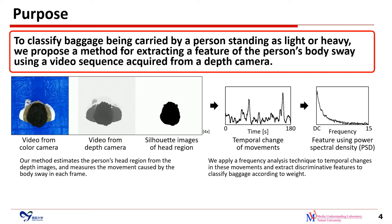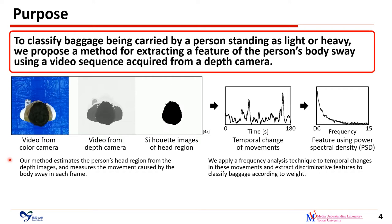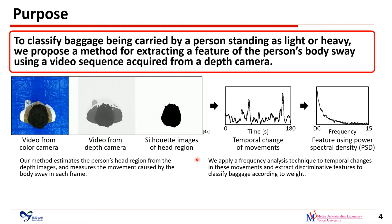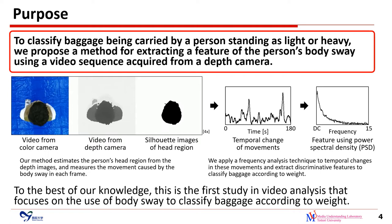To classify baggage carried by a standing person as light or heavy, we propose a method for extracting a feature of the person's body sway using a video sequence acquired from a depth camera. Our method estimates the person's head region from the depth images and measures the movement caused by body sway in each frame. We apply a frequency analysis technique to temporal changes in these movements and extract discriminative features to classify baggage according to weight. To the best of our knowledge, this is the first study in video analysis that focuses on body sway to classify baggage by weight.